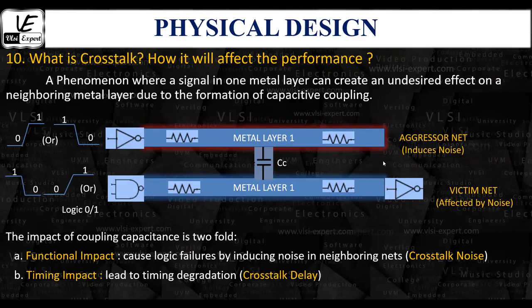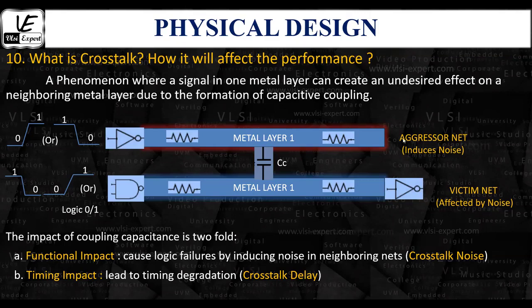The wire which influences the noise is called the aggressor net, and the wire which is affected by the noise is called the victim net. Moreover, if the noise induced on the victim net crosses the noise threshold voltage of a receiving gate, it may alter the expected logical output state. So the impact on the output logical function is due to the crosstalk noise induction by the aggressor net.